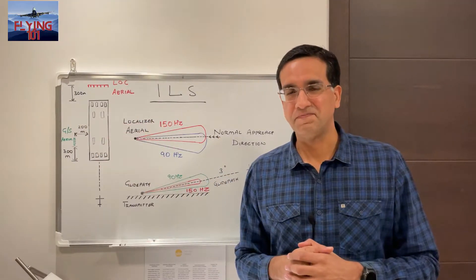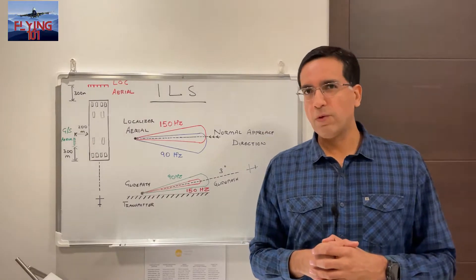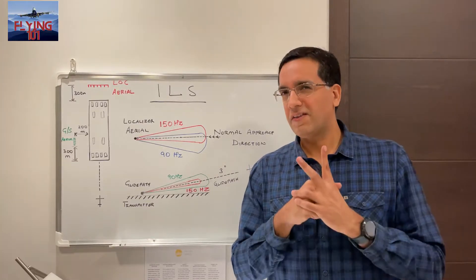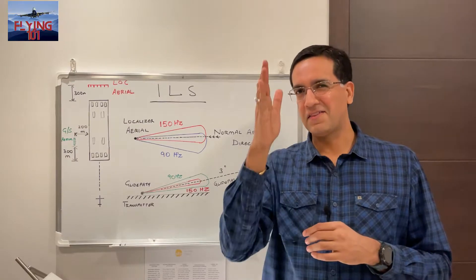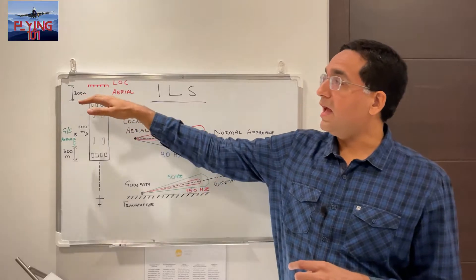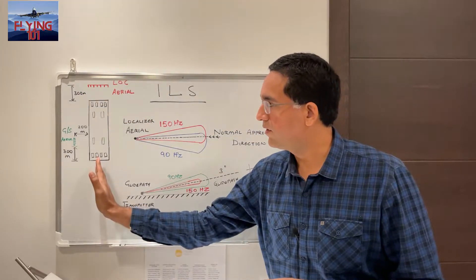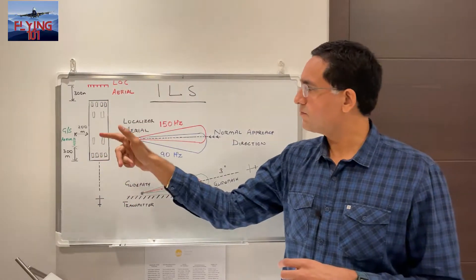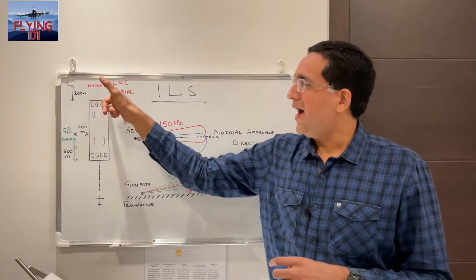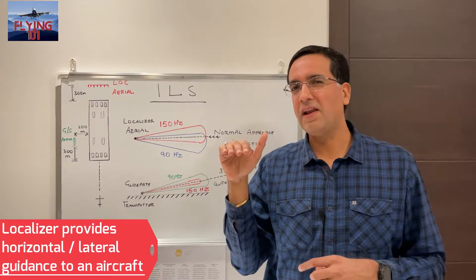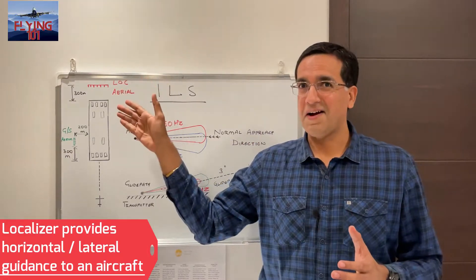Now let's look at the components that constitute an ILS system — two transmitters providing guidance in the vertical and horizontal planes. The first is a localizer transmitter or localizer aerial. The position of this antenna is at the end of the runway — on the far side from where the aircraft lands — usually about 300 meters from the edge of the runway, and its job is to provide horizontal guidance to align the aeroplane with the runway.